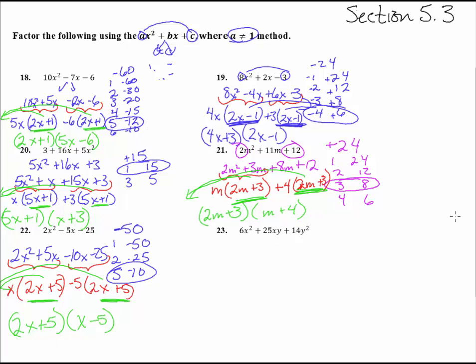Number 23. This has y's in it. It might scare some people, but it's done the exact same way. Take 6 times 14. Now 6 times 14 is like 84. And that's a positive. So 84 could be 1 and 84, 2 times 42. 3 goes into 84, I think 3 goes into it 28 times. 4 goes in 21 times, 6 goes into it 14 times, 7 goes into it 12 times. So we look to see what adds up to 25, and we have this 4 and the 21 right there.